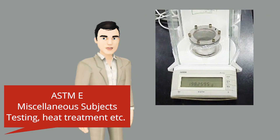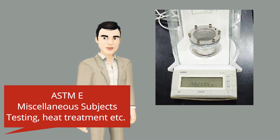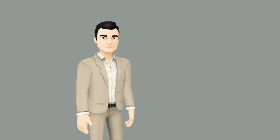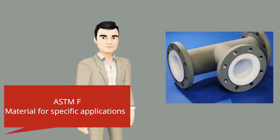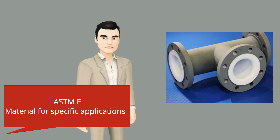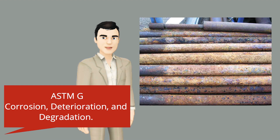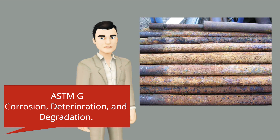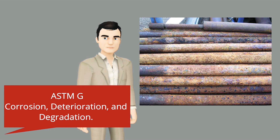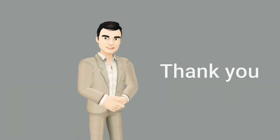ASTM E is used for miscellaneous subjects like testing of materials. ASTM F is used for specific applications. ASTM G is used for corrosion, deterioration, and degradation of materials.